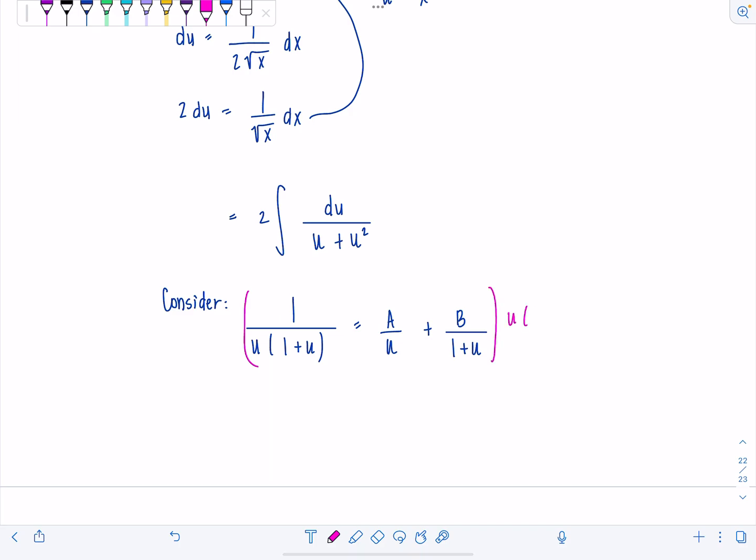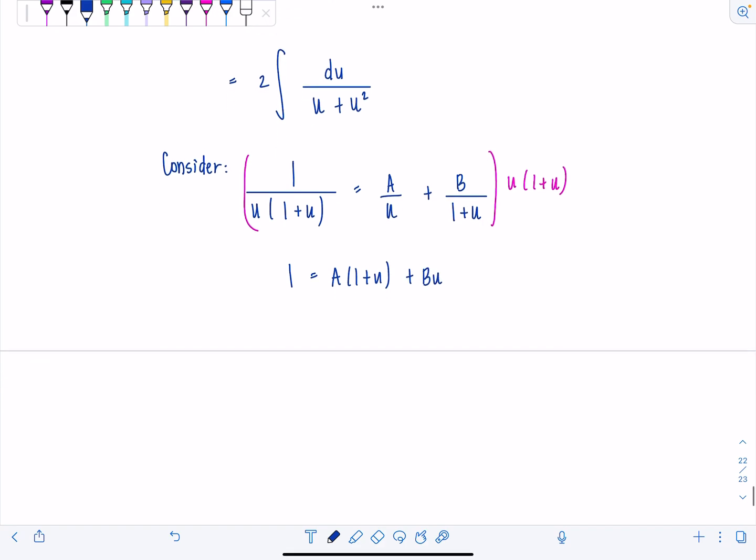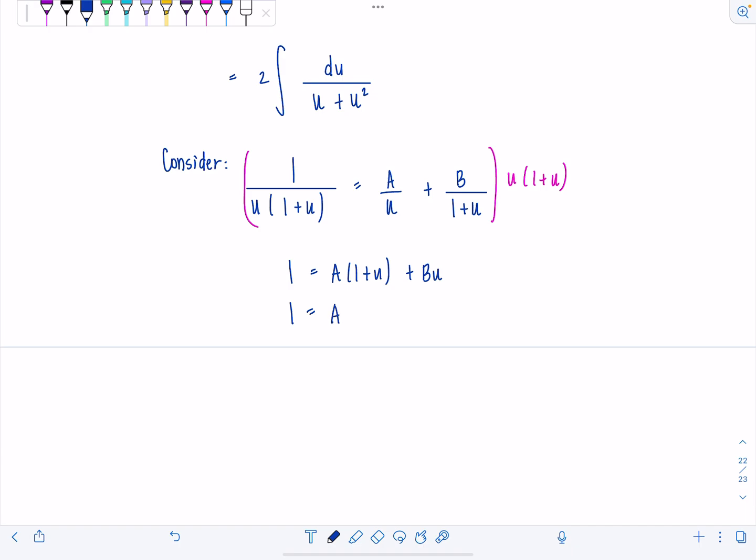Let's multiply through by u times 1 plus u. And then now I have 1 equals a times 1 plus u plus b u. 1 equals a plus au plus bu.